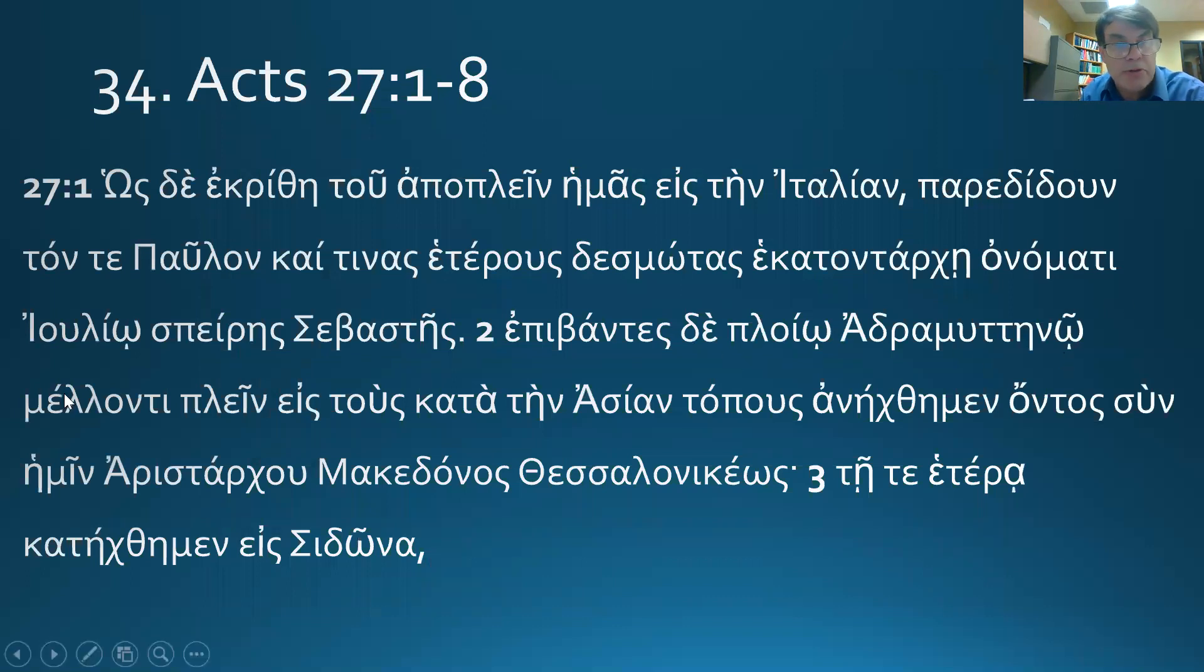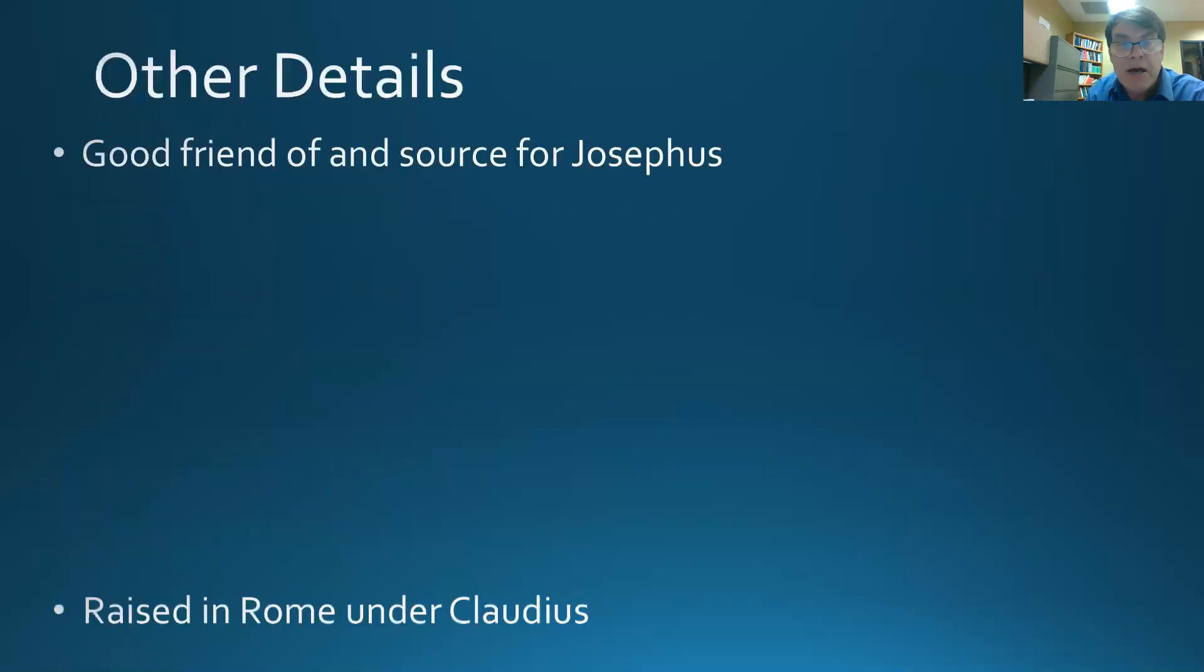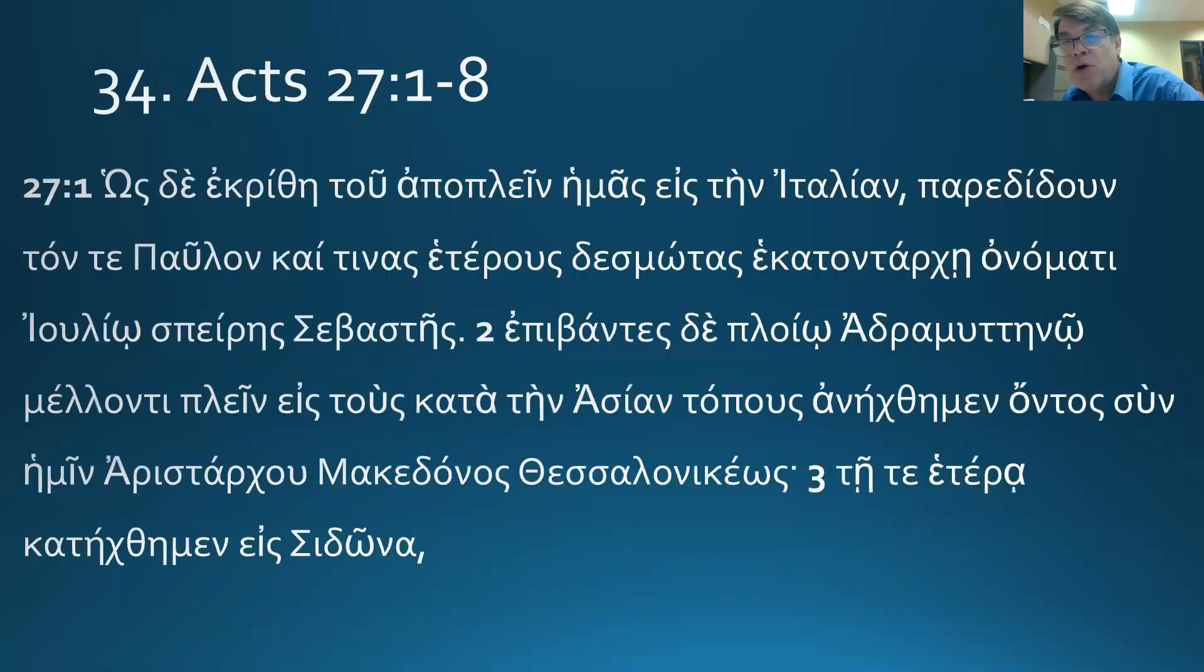So having embarked on an Adramyttian boat that was about to sail into the places along Asia. So it's going along the Asia, along the places along Asia. It's going to hug the coast. We're in late fall or early winter about now. And so it's getting rough to sail, especially this direction, the wrong direction.